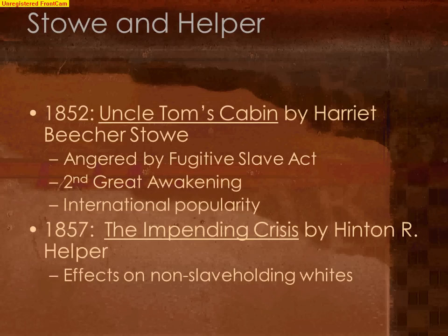Many Southerners believed that should war come between the U.S. and the CSA — the Confederate States of America — Great Britain would step in to help the South so they could continue trading cotton. However, Uncle Tom's Cabin linked the South to this evil institution of slavery. Slavery had already been outlawed in Great Britain, and there was a large abolitionist sentiment there as well.